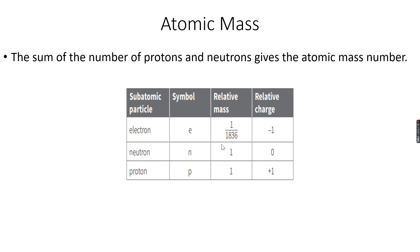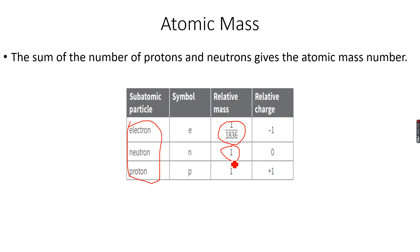We do not add the mass of an electron when calculating atomic mass. You might ask why — the reason is that the mass of an electron is negligible compared to the mass of a proton or neutron. As you can see, the mass of an electron is really very small compared to the mass of neutrons and protons, so we ignore it.